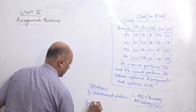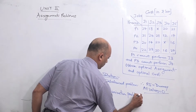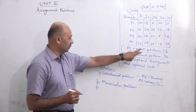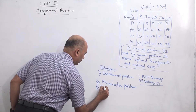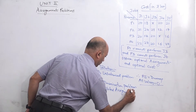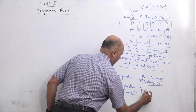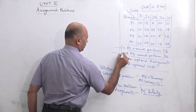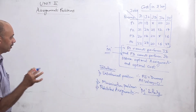Second, cost is given so it is a minimization problem. Third, these are the conditions that certain assignments are not possible: P1J3 is not possible and P3J4 is not possible — this is called a prohibited assignment problem. Wherever assignments are prohibited, we assign M which is infinity, meaning there is no calculation in that particular cell.